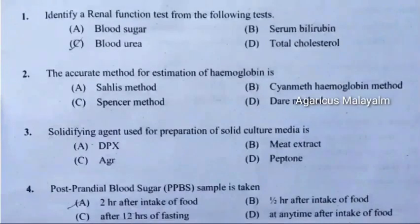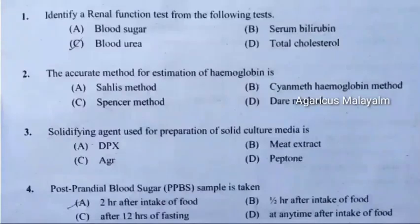First question: Identify a renal functional test from the following options. Correct answer is Option C: Blood urea.